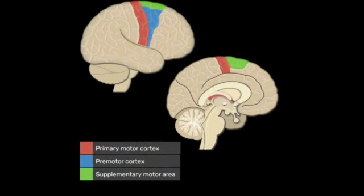Two areas in the frontal lobe especially important for communication with the parietal lobe are the supplementary motor area and the premotor cortex. The supplementary motor cortex, known as the SMA, is involved in controlling movements, especially planning complex movements. You can see here in the picture where it's located. When you actually move, you see the SMA proper activated, whereas when you mentally practice, it's the very front part of the SMA that's activated — typically involved in movement preparation, getting ready to move but not actually moving. So it makes sense that's what's activated during mental practicing.